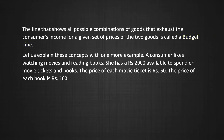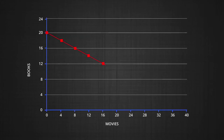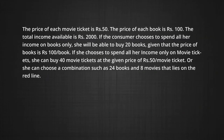Let us explain these concepts with one more example. A consumer likes watching movies and reading books. She has 2,000 rupees available to spend on movie tickets and books. The price of each movie ticket is rupees 50 and the price of each book is rupees 100. In this diagram, movie tickets are shown on the x-axis and books on the y-axis. If the consumer chooses to spend all her income on books only, she will be able to buy 20 books. If she chooses to spend all her income only on movie tickets, she can buy at most 40 movie tickets.